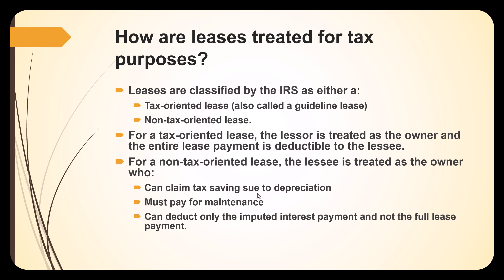Leases are classified by the IRS as either tax-oriented or non-tax-oriented. In a tax-oriented lease, the lessor is treated as the owner — they can claim depreciation, pay for maintenance, but can only deduct the imputed interest (the effective interest payment) on the lease payment, not the whole lease payment. How the lease is classified is important.